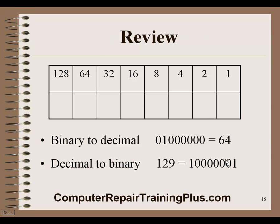Now for our review: going binary to decimal, if we set the 1 in the 64's place, we get decimal 64 — that's our binary-to-decimal equivalent. Going from decimal to binary, we take our decimal number and figure out the binary equivalent. For example, 129: we don't have a 129, but we have 128, and then we add 1. Setting the first and last bits gives us a binary number of 10000001.